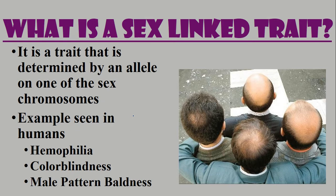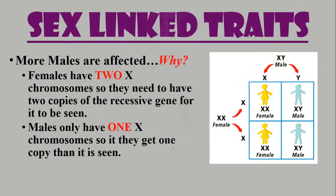Sex-linked traits are traits determined by an allele on one of the sex chromosomes. Examples in humans include hemophilia — where you don't make enough of the clotting enzyme, so when you get a cut your blood doesn't clot well and it can be fatal — color blindness, where you can't see certain colors or see in black and white, and male pattern baldness. Male pattern baldness is not only for males; females can have it too, they're just very unlucky in the genetic lottery.